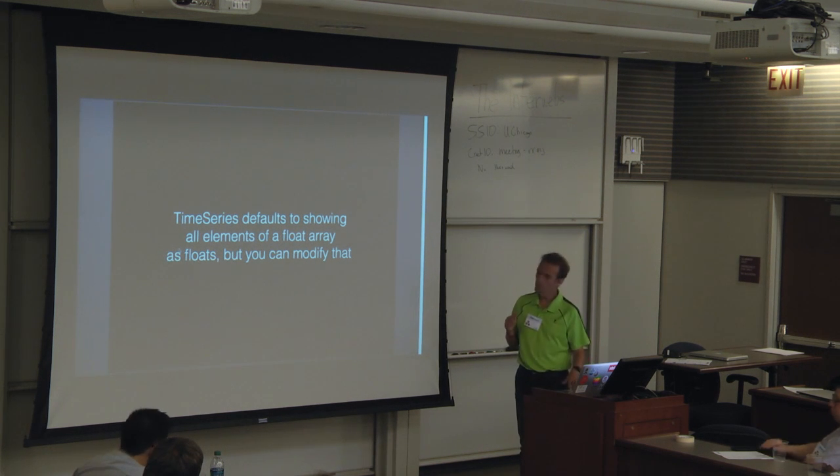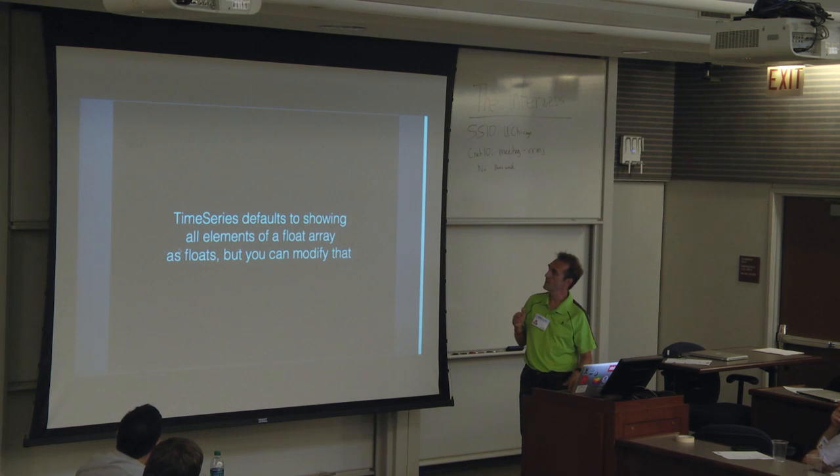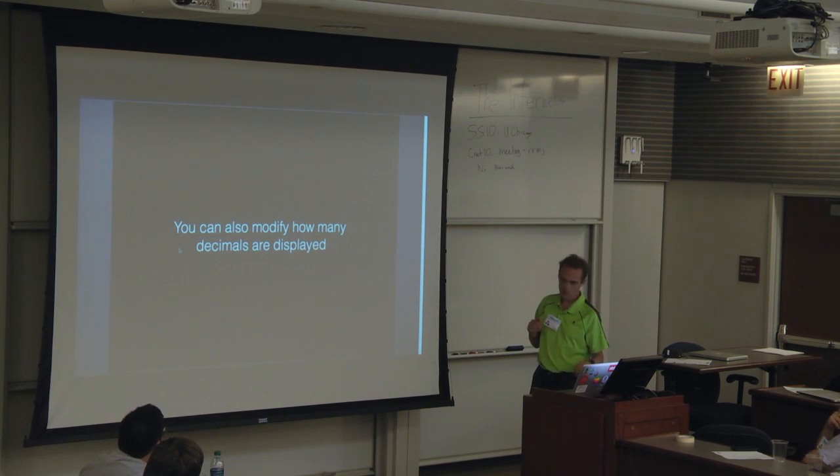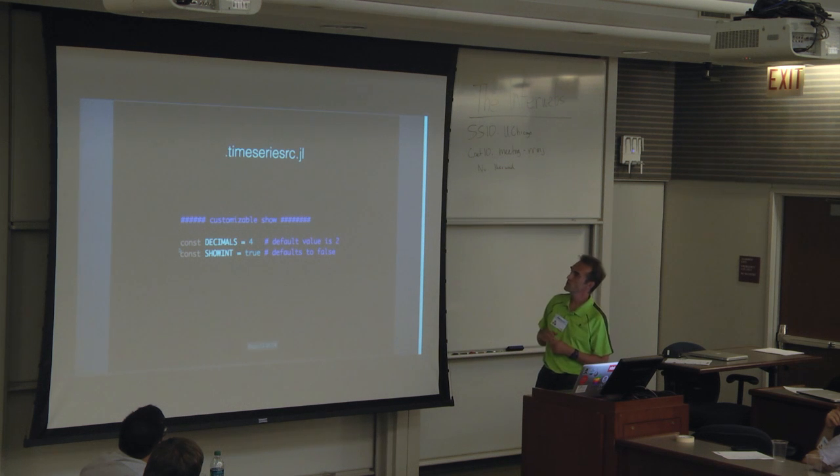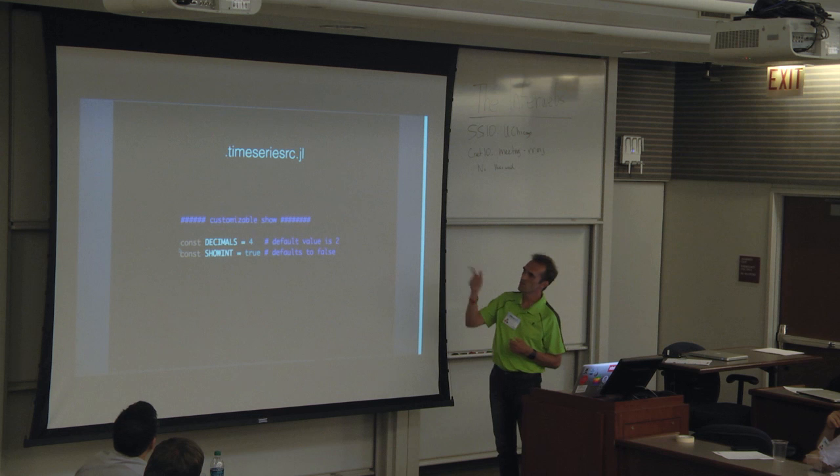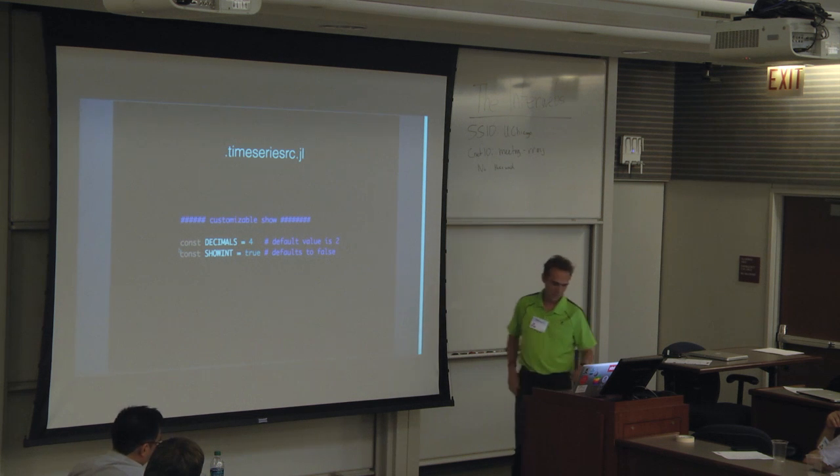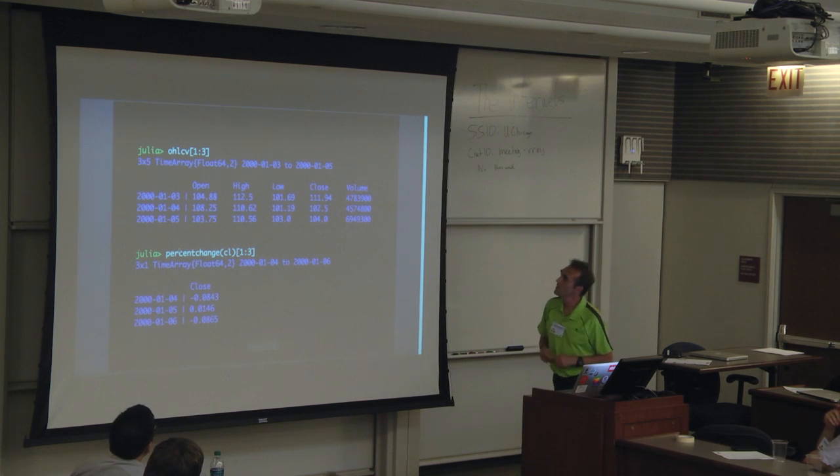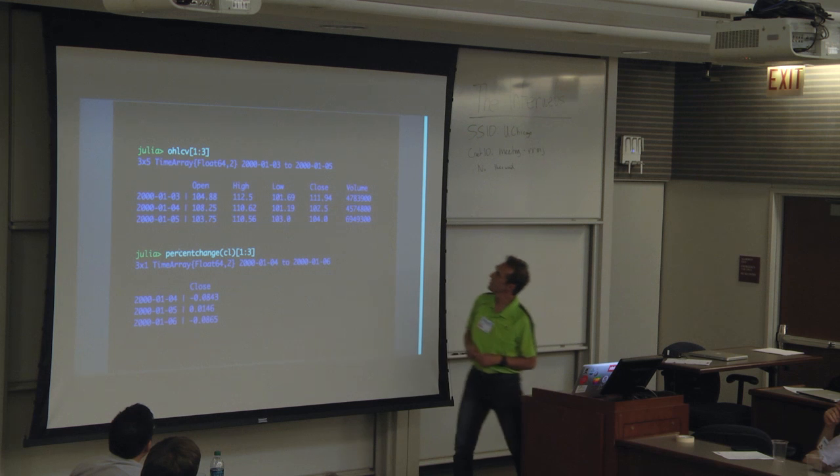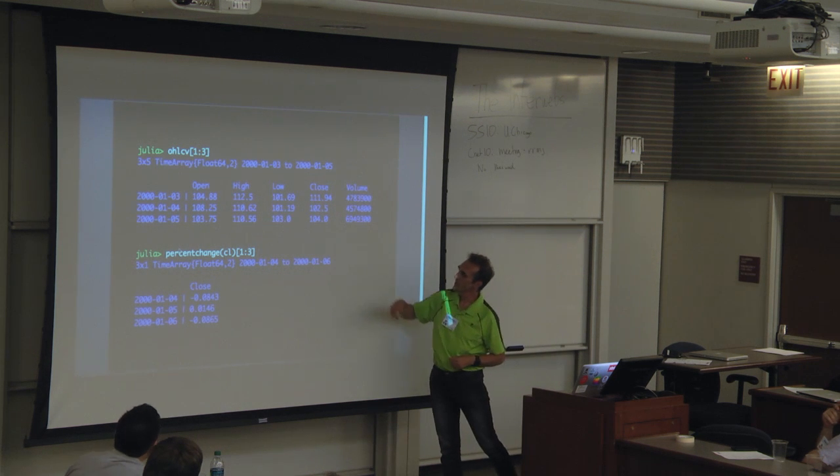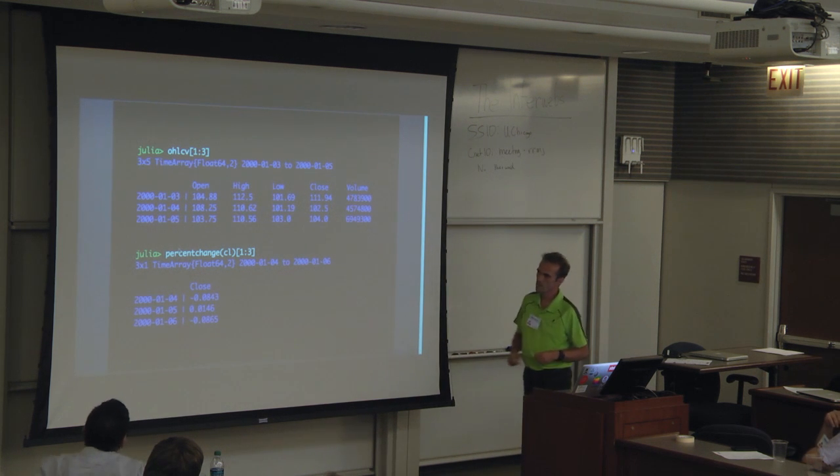TimeSeries by default doesn't do that. It shows floats as floats, but I put in a little thing. I really like that little feature. I put something you can modify that with. You can also modify how many decimals are displayed. It's just a small file called .timeseriesrc.jl, and just to define different constants here. And we get the same result right here. It'll show the float doesn't have trailing decimals.